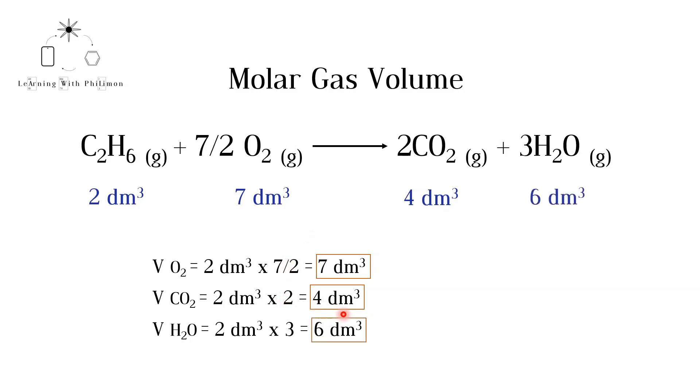Note that you would get the same volumes if you first calculated the number of moles of the reactants and products and then used this equation to calculate the volume. However, the method we have seen is a shortcut that can be used when only gases are present and the reaction occurs at room temperature and pressure.